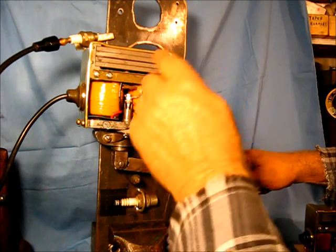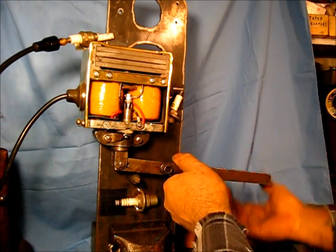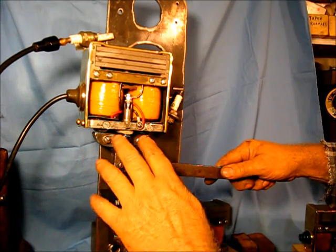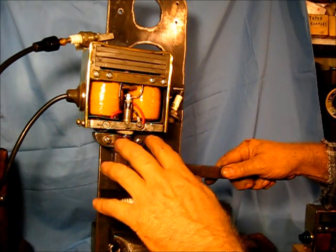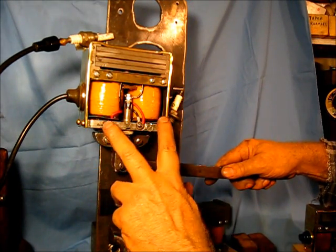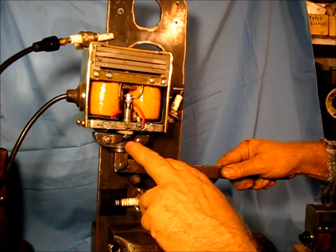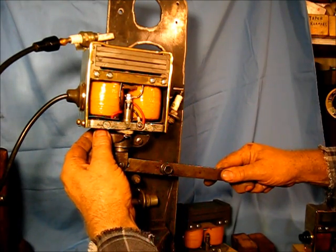When you trip the armature, the armature will leave the pole pieces the distance of that point gap. See right there, the points are touching closed.